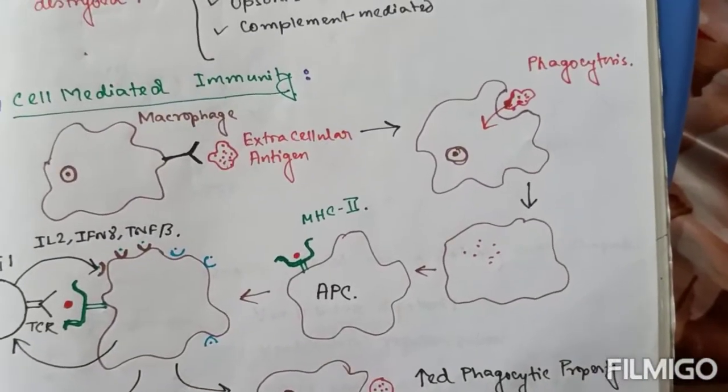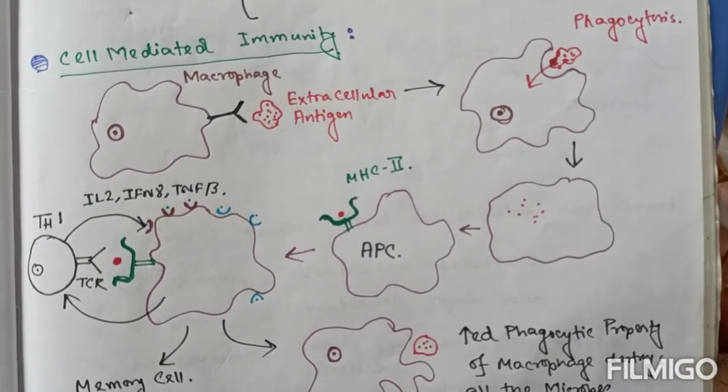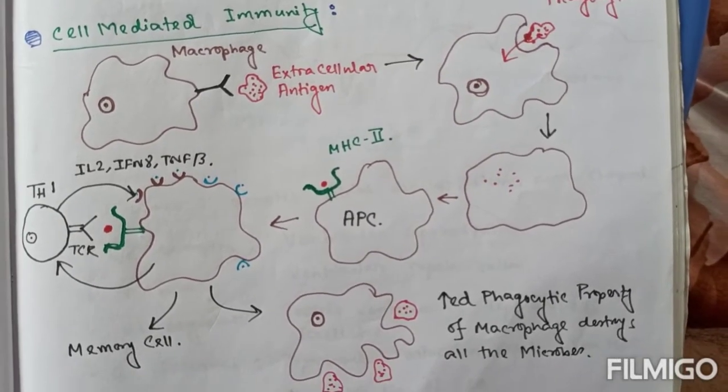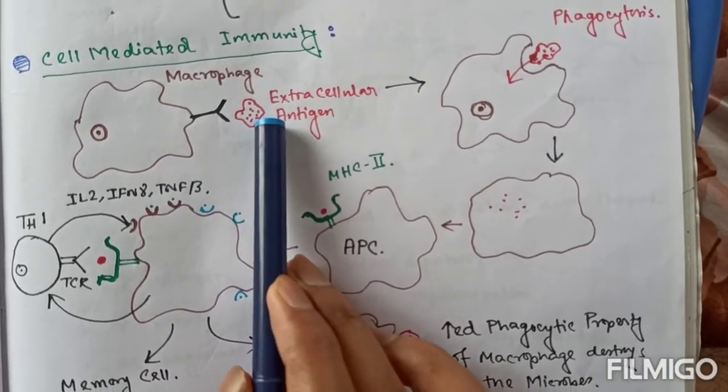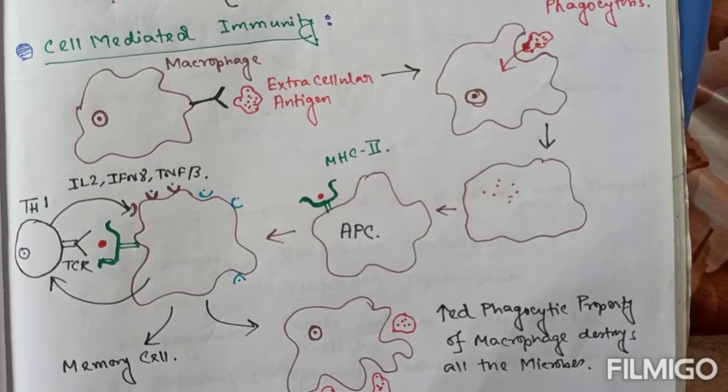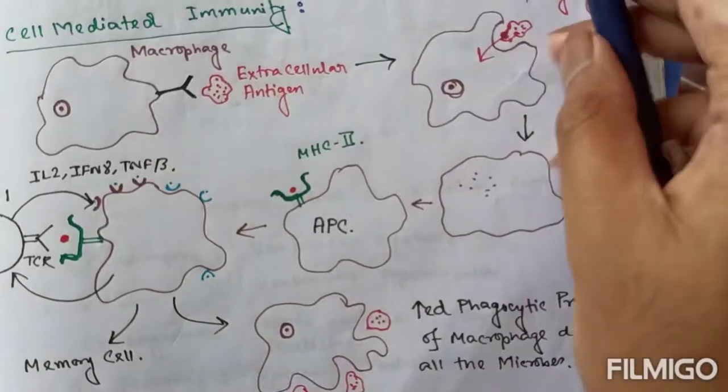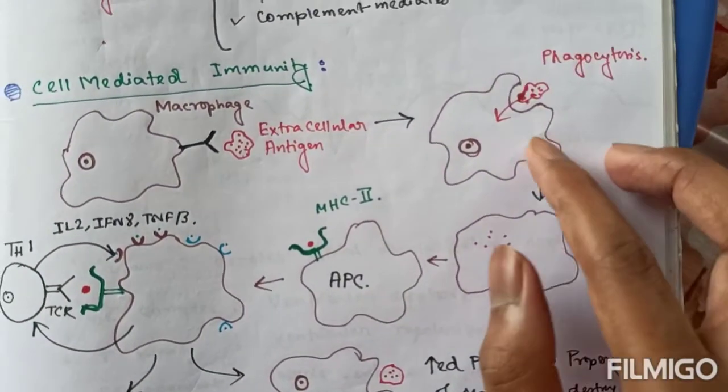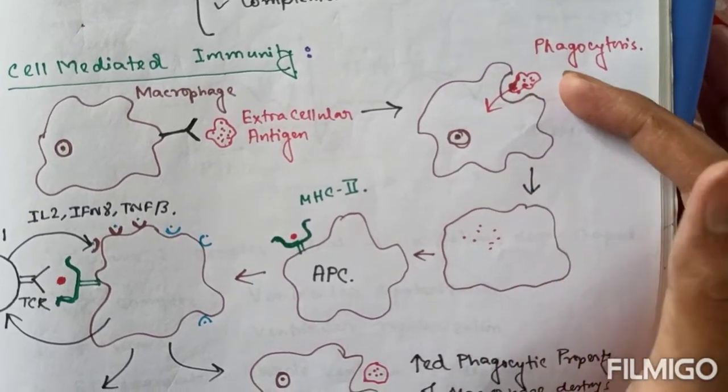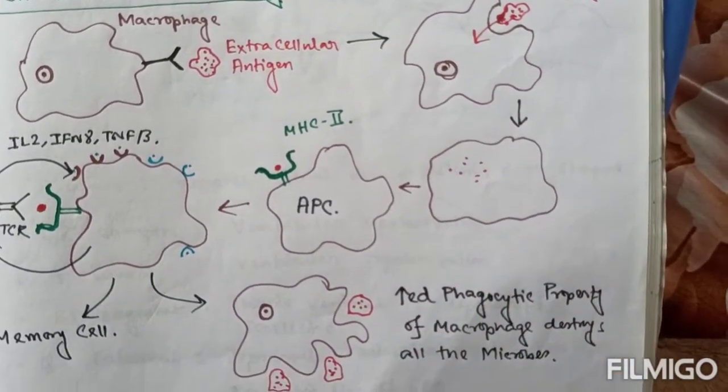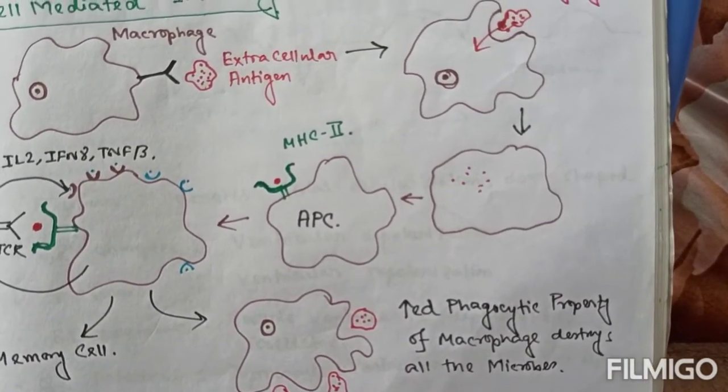Next, cell-mediated immunity. Here various types of cells directly act on the antigens or microbes. Like macrophage which can recognize any extracellular antigen and has a severe activity against these antigens. After recognizing, they easily phagocytose these antigens and soon degrade into various peptides with the help of lysosomes present inside the macrophage.